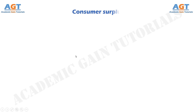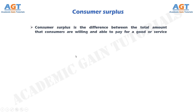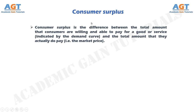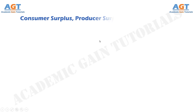Consumer surplus is the difference between the total amount that consumers are willing and able to pay for a good or service, indicated by the demand curve, and the total amount that they actually do pay, that is, the market price. Let's look at the relation between consumer surplus, producer surplus, and total surplus.